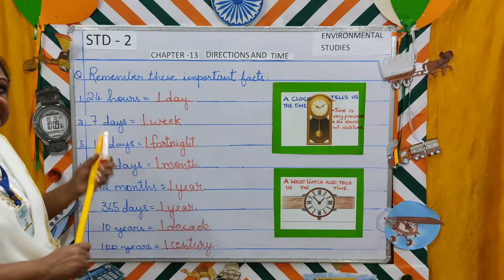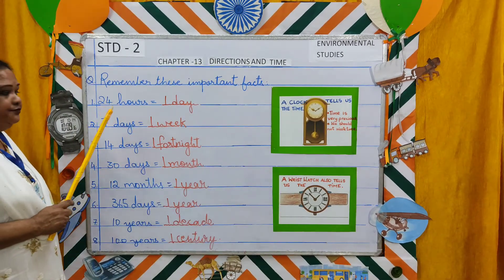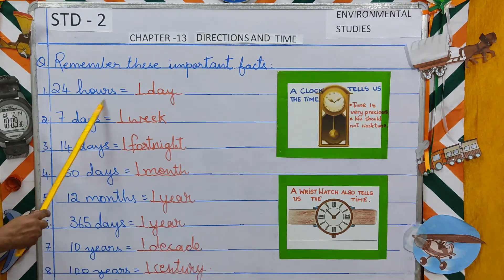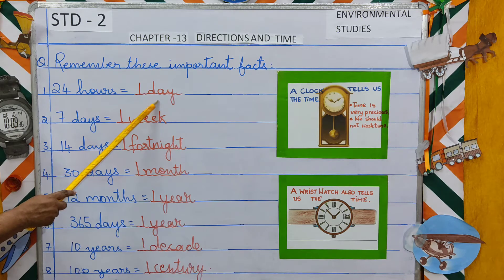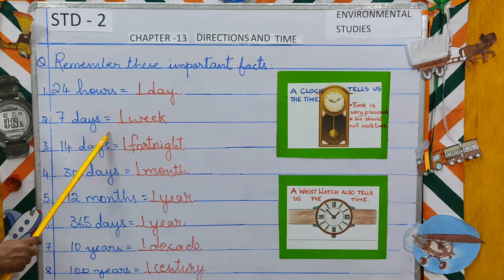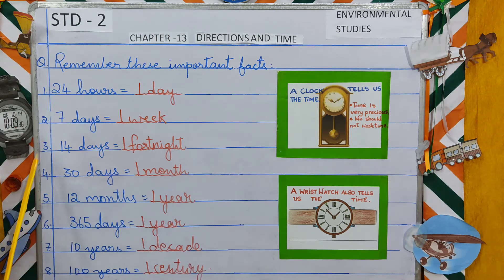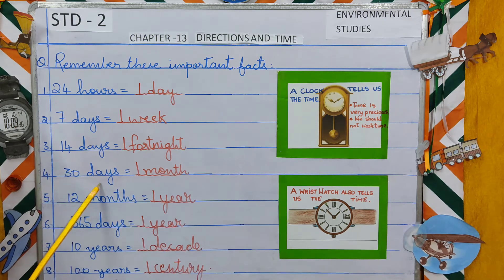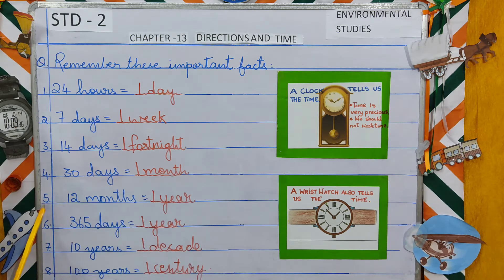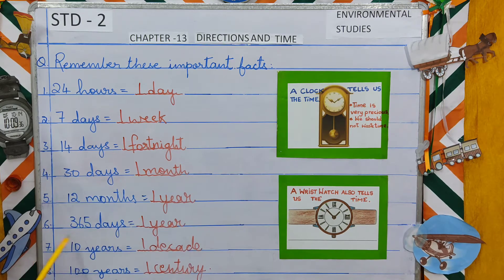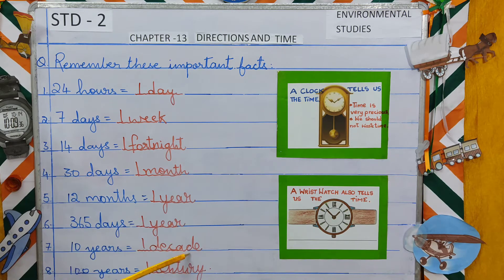Let us repeat these important facts. Number 1: 24 hours make 1 day. Number 2: 7 days make 1 week. Number 3: 14 days make 1 fortnight. Number 4: 30 days make 1 month. Number 5: 12 months make 1 year. Number 6: 365 days make 1 year. Number 7: 10 years make 1 decade. Number 8: 100 years make 1 century.